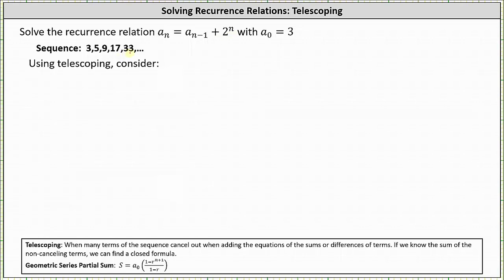Analyzing the sequence, notice how the terms are increasing by powers of two. Five minus two is two to the first. Nine minus five is four, or two squared. 17 minus nine is eight, or two cubed. 33 minus 17 is 16, which is two to the fourth, and so on. Since the terms differ by powers of two, which we can determine by looking at the recurrence relation, we will use the method of telescoping to determine the closed formula.